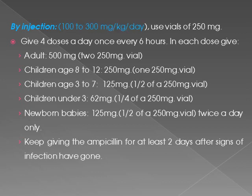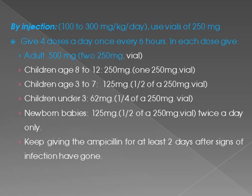By injection: 100 to 300 mg/kg/day. Use vials of 250 mg. Give 4 doses a day, once every 6 hours. In each dose give: Adults — 500 mg (2 × 250 mg vials). Children age 8 to 12 — 250 mg (1 × 250 mg vial).